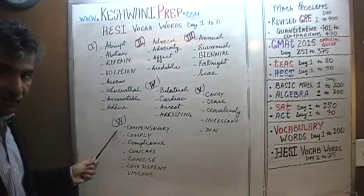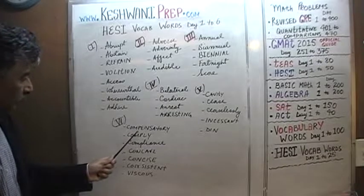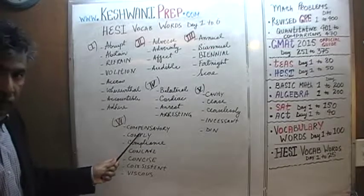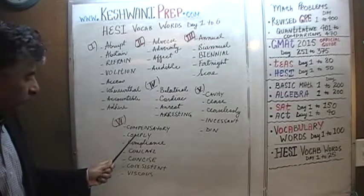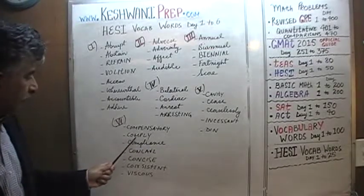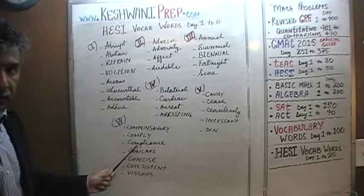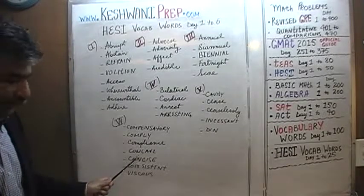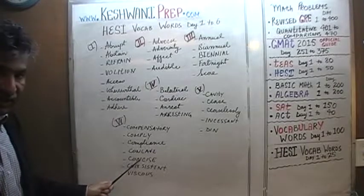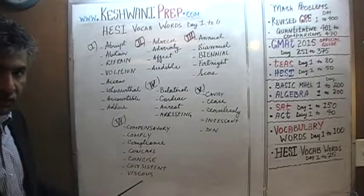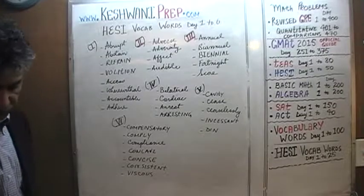And finally, day number six: compensatory — it comes from compensation — comply, compliance, concave, concise, consistent, and finally, viscous.